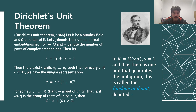This is called the fundamental unit, denoted ε. As we've seen, the elements of norm plus or minus 1 in k equals Q(√d) — that is, the units — are in correspondence with solutions to Pell's equation.